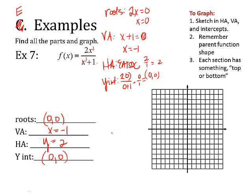I found all these parts. Now, I need to graph them. So, I have a point at the origin. I have a vertical asymptote at negative 1. I have a horizontal asymptote at y equals 2. And, my y intercept is the same as my x intercept. So, I only have one point. But, I do know that the line has to go through that point and hug the asymptotes.